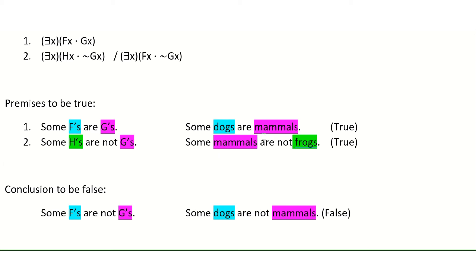Now we still have two true premises and a false conclusion, but this argument is no longer a counterexample for the given argument because the second premise has a different form now.